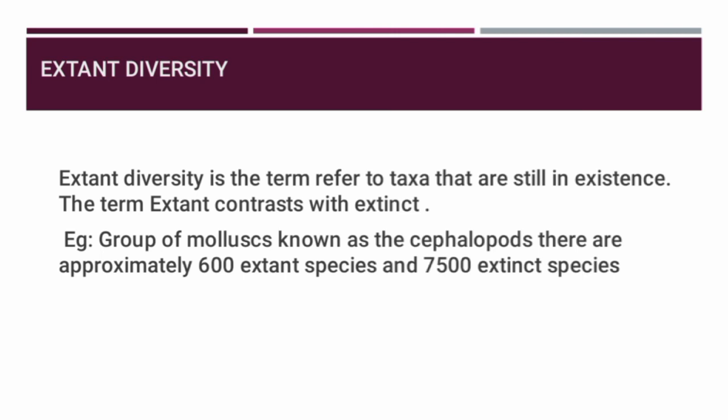For example, in the group of mollusks known as the cephalopods, there are approximately 600 extant species and 7,500 extinct species. This illustrates the meaning of extant diversity and extant species.